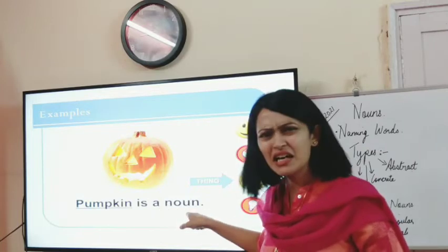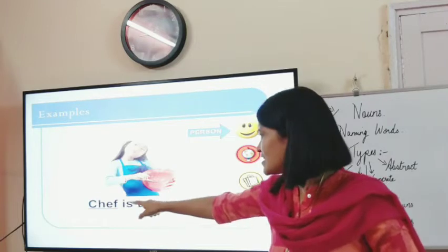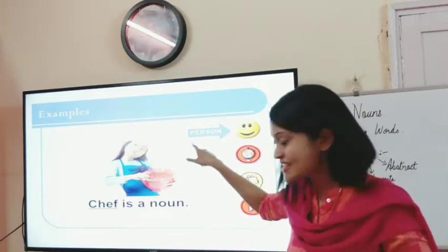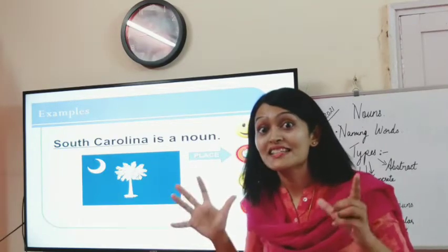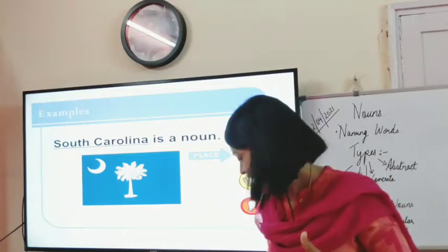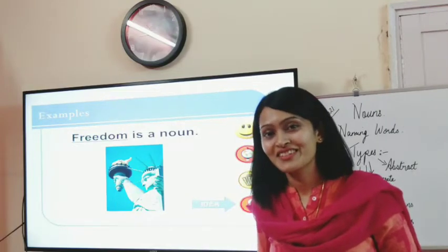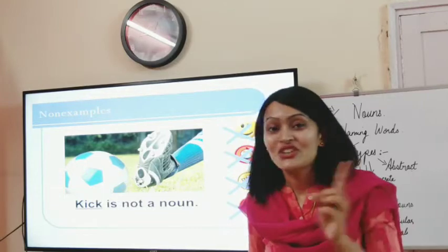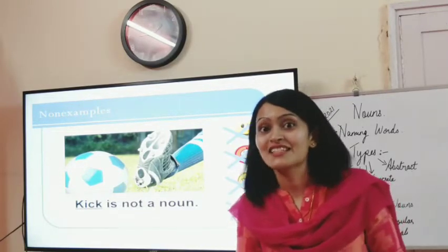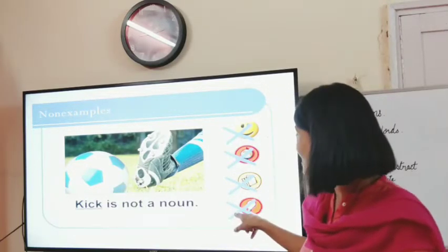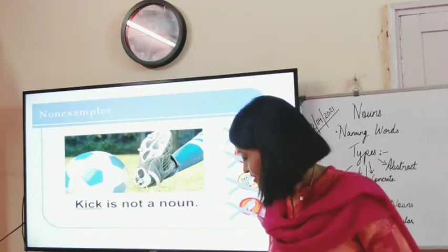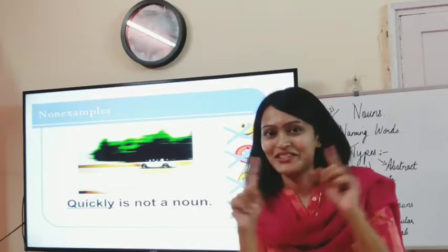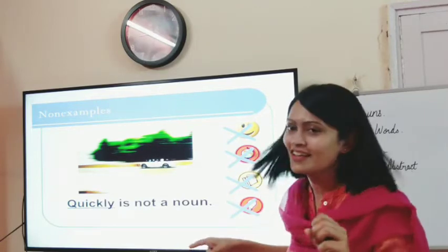Let's check some examples. Is pumpkin a noun? Yes, because it is a thing. Is chef a noun? Yes — chef is a person who cooks food in a restaurant or hotel, so it is a noun. South Carolina is a noun — it is a place. Freedom is a noun — it is an idea. Is kick a noun? Kick is an action being performed — it's not a thing, not a place, not a person, not an idea. So kick is not a noun.